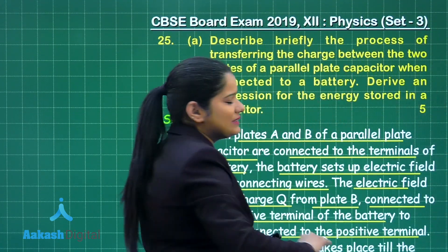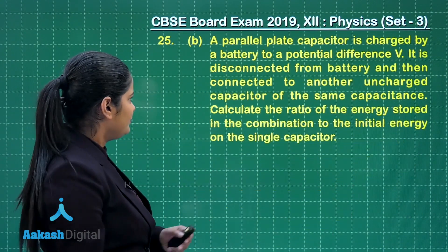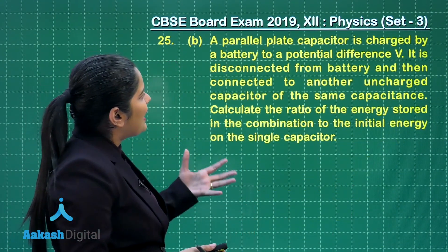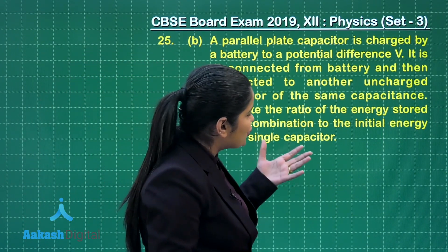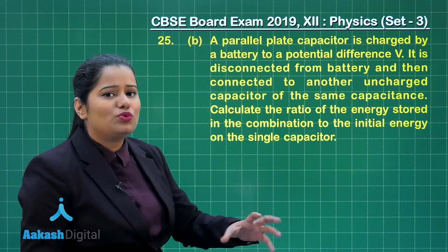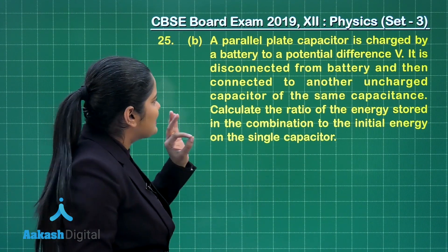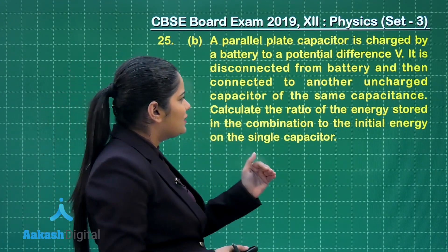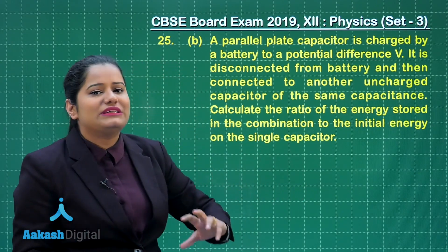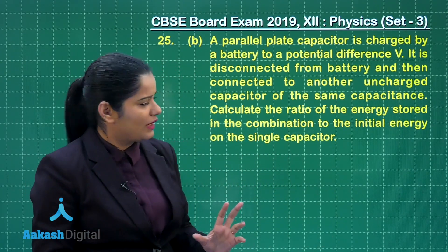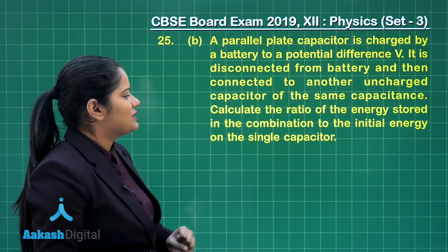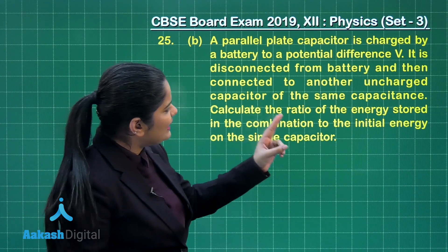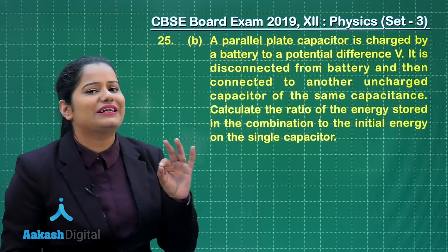Let us look at the second part of the same choice of the question — Part B. This says a parallel plate capacitor is charged by a battery to a potential difference V. It is disconnected from the battery and then connected to another uncharged capacitor of the same capacitance. This question wants us to calculate the ratio of the energy stored in the combination to the initial energy on the single capacitor.